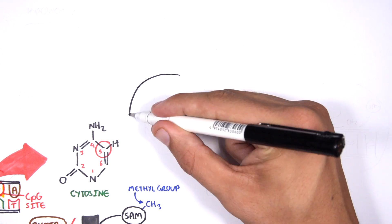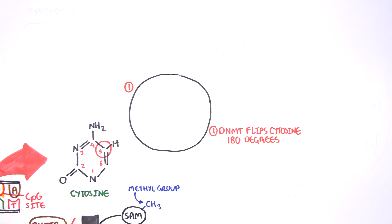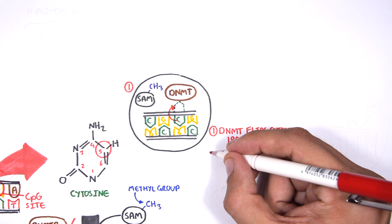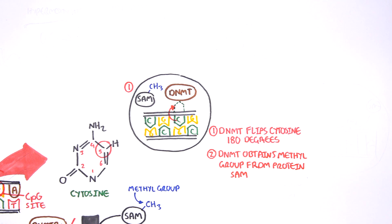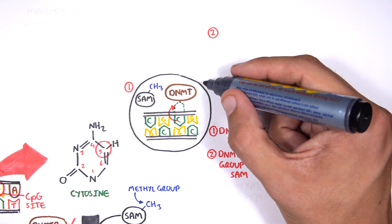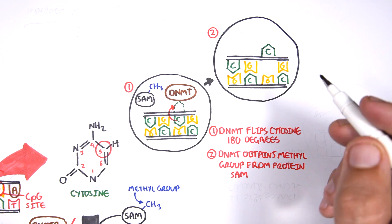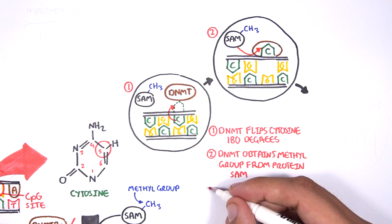It is thought that DNMT flips the cytosine base pair 180 degrees out of the strand. Then the DNMT enzyme obtains the methyl group from SAM and transfers it to the cytosine. Finally, the methylated cytosine is flipped back.